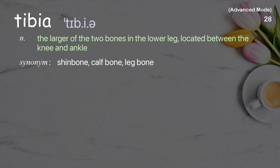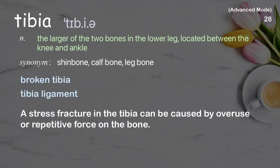Tibia: the larger of the two bones in the lower leg, located between the knee and ankle. Examples: broken tibia, tibia ligament. A stress fracture in the tibia can be caused by overuse or repetitive force on the bone.